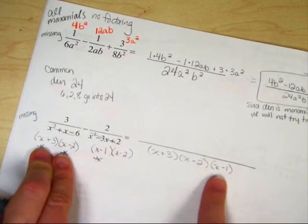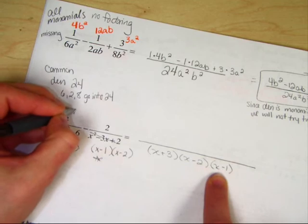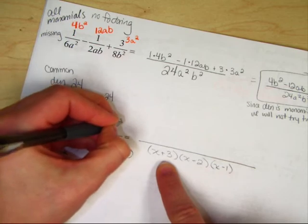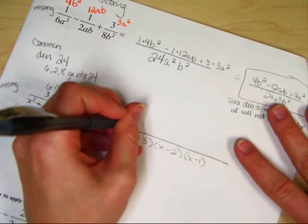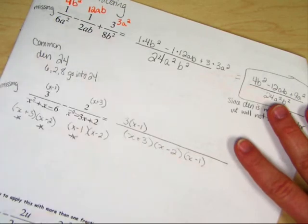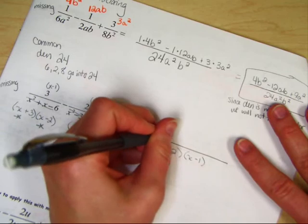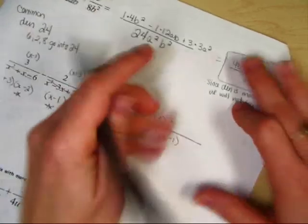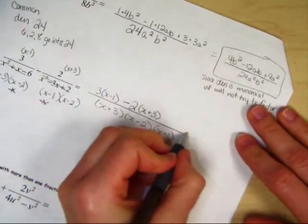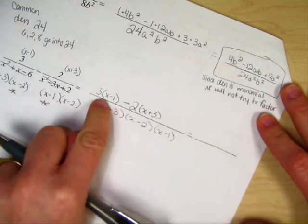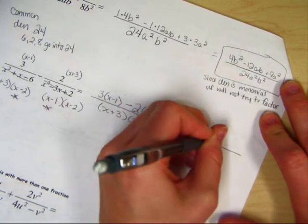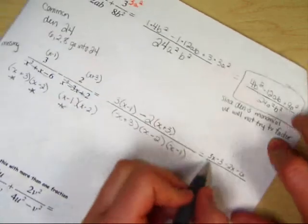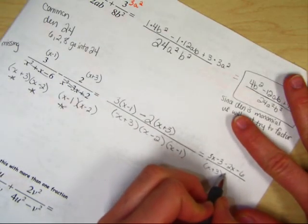Now we need to figure out what's missing. These two are missing an x minus 1. These two are missing an x plus 3. Now move over. This becomes 3 times x minus 1. This is a minus 2 times x plus 3. Now we need to distribute. This becomes 3x minus 3. This becomes minus 2x minus 6.